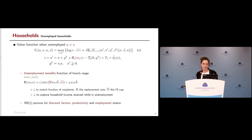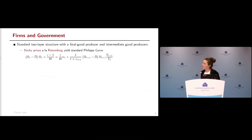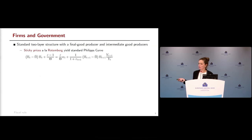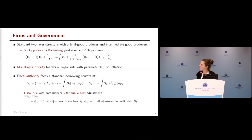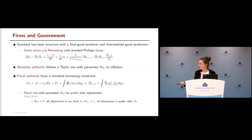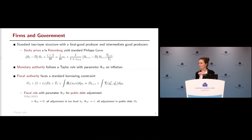The firm sector has a standard two-layer structure with final and intermediate good producers. Sticky prices à la Rotemberg give a standard Phillips curve. The monetary authority has a Taylor-rule coefficient phi_pi on inflation. For the fiscal authority, a standard borrowing constraint is used, and fiscal stabilization packages are financed via a fiscal rule with parameter phi_d: when phi_d equals zero, all packages are financed by higher labor taxes; when phi_d equals one, all packages are financed with public debt.